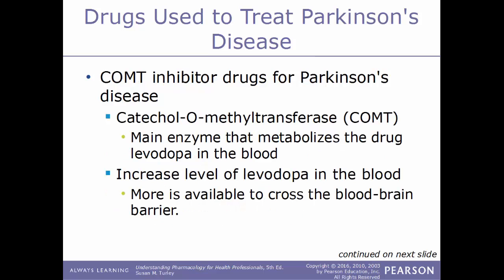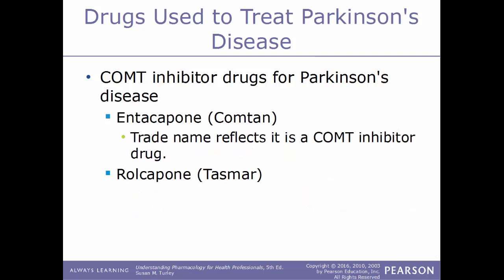Another type are COMT inhibitor drugs. COMT stands for catechol-O-methyltransferase, the main enzyme that metabolizes levodopa within the blood. By inhibiting that enzyme, more levodopa is available to cross the blood-brain barrier. Examples include entacapone, sold under the brand name Comtan — notably, the trade name reflects COMT — and tolcapone, sold under the trade name Tasmar.